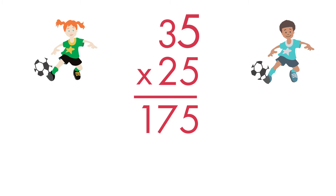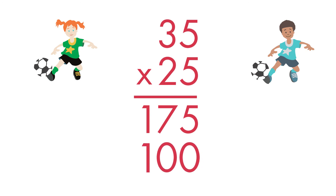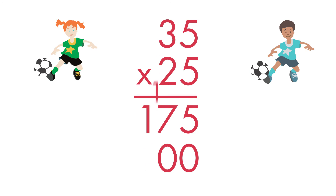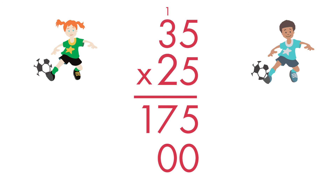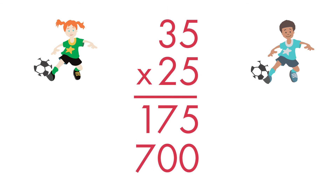Next, multiply 5 ones by 2 tens, or 20. 5 times 20 is equal to 100. Write 0 in the tens and ones place. Write 1 above the 3 in the tens place. Multiply 3 tens by 2 tens. This is equal to 6 tens. Then add the 1 hundred. 6 tens plus 1 hundred is equal to 7 tens, or 700. Write 7 in the hundreds place.